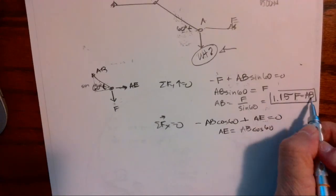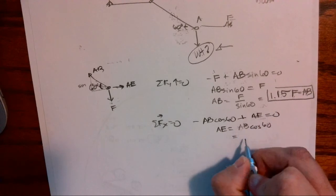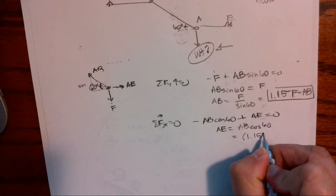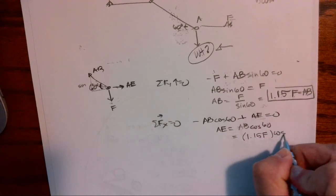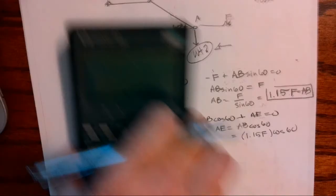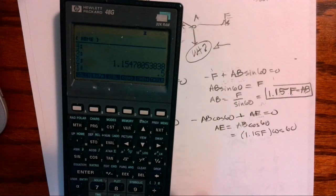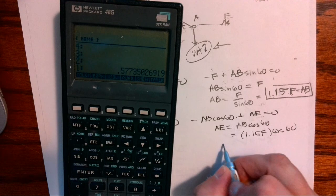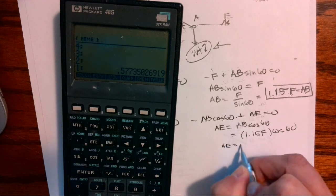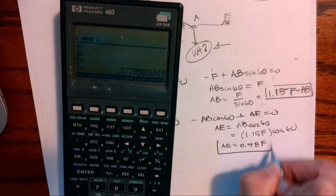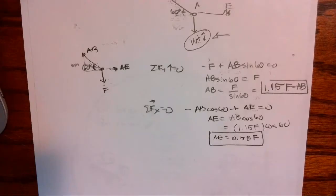Okay, I have to get another pencil, sorry about that. So I have AB, AB cosine 60, and I've already found this relationship of AB with the force, so I can 1.15 F cosine 60. And if I multiply that out, so cosine 60 times, I get that AE equals 0.58 F.